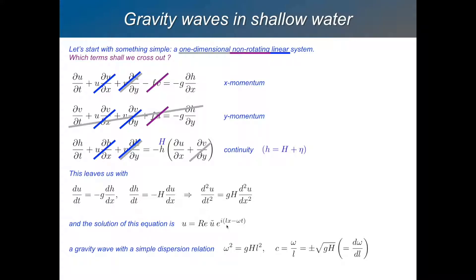Lx minus omega t. Now, Lx, L is the wave number in the x direction, so it's 2 pi divided by the wavelength in the x direction. Omega is the angular frequency, so that's 2 pi divided by the period. And expressed like that, that's a wave which is propagating in the positive x direction when L is positive.